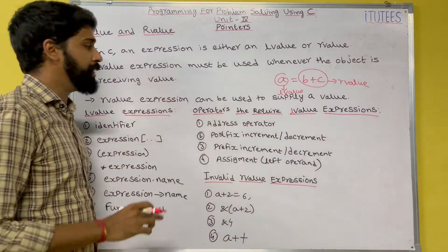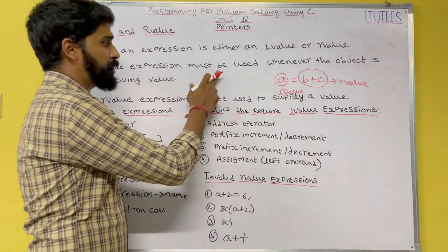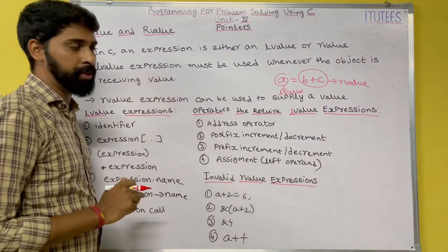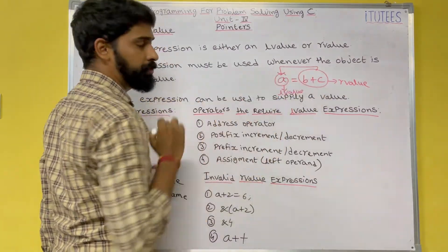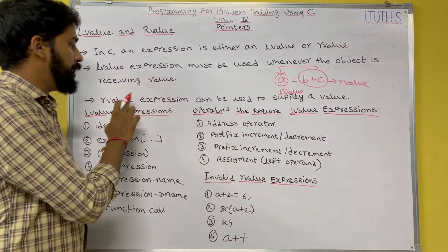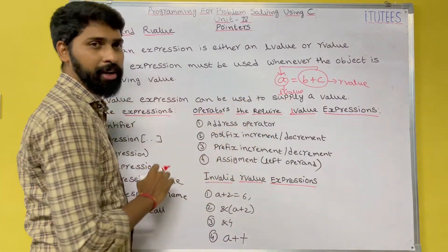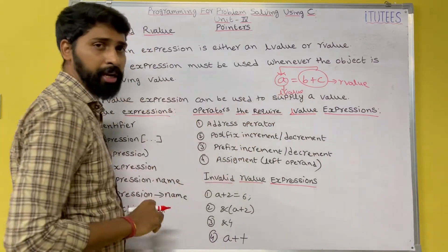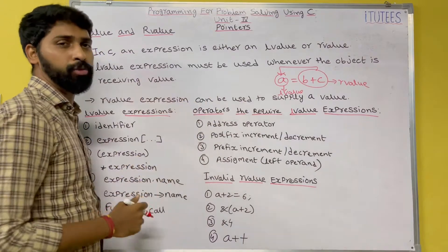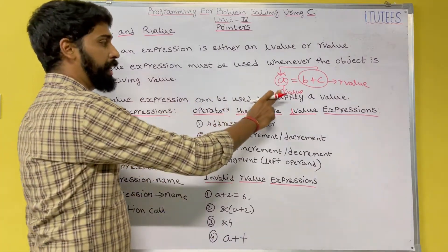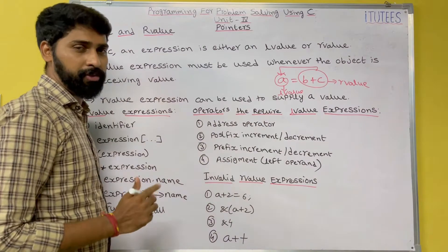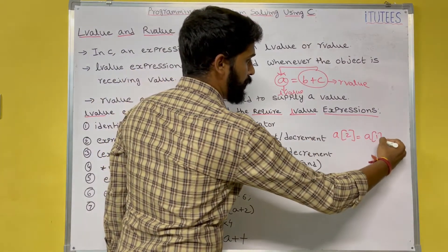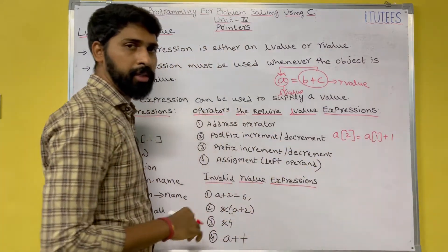An l-value expression must be used whenever the object receives the value — it receives the value. An r-value expression can be used to supply a value; 'b + c' returns a value that is assigned to 'a'. So in 'a = b + c', 'a' is the l-value and 'b + c' is the r-value.